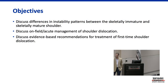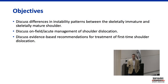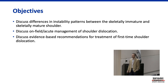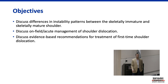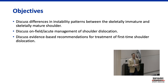These are the objectives — some of the things we're going to cover, including the differences in instability patterns between the skeletally immature or pediatric patient and the more skeletally mature patient. We'll discuss on-field and acute management, including relocation techniques for a dislocated shoulder, and then evidence-based recommendations for treatment. Once we have the shoulder relocated, how do we address that, and how does it differ between the patients we're dealing with?